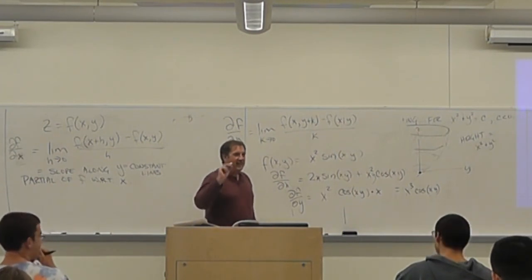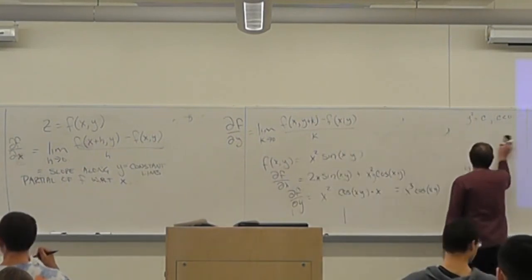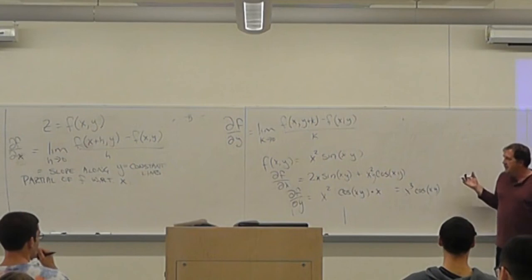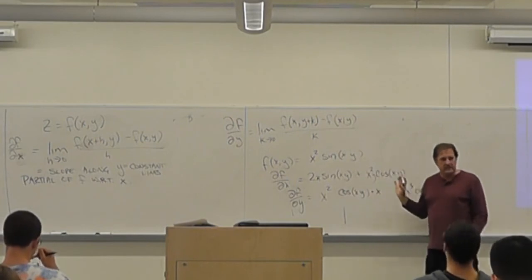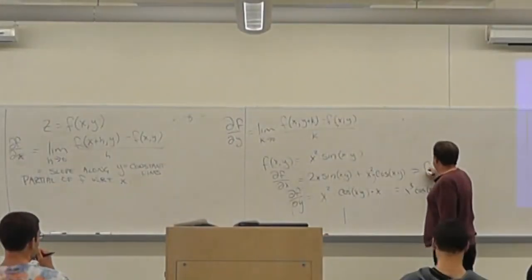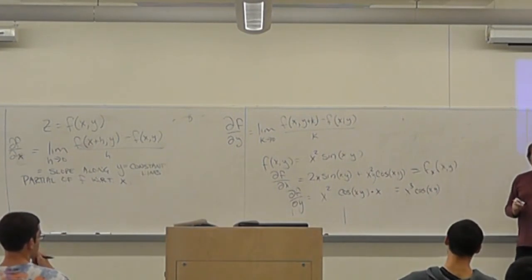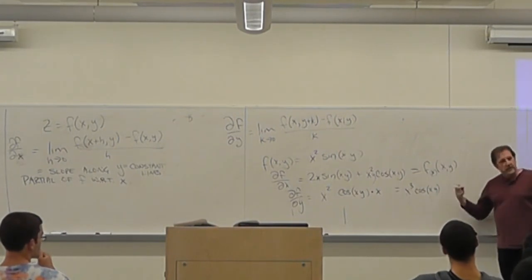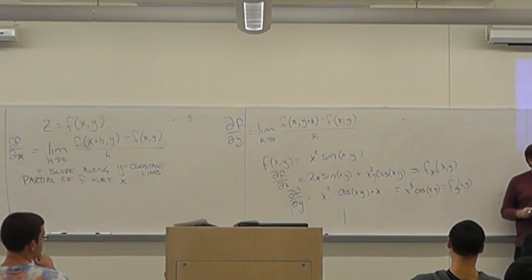Computing partial derivatives is really easy — you just remember that everything except this variable is held fixed; it's a constant. But you need to keep in mind what it means. Another notation: the partial with respect to x is sometimes written as f_x, and with respect to y as f_y. Do you have a preferred notation? It depends — ∂f/∂x is more useful for complicated formulas; f_x is useful when thinking of it as an operator.